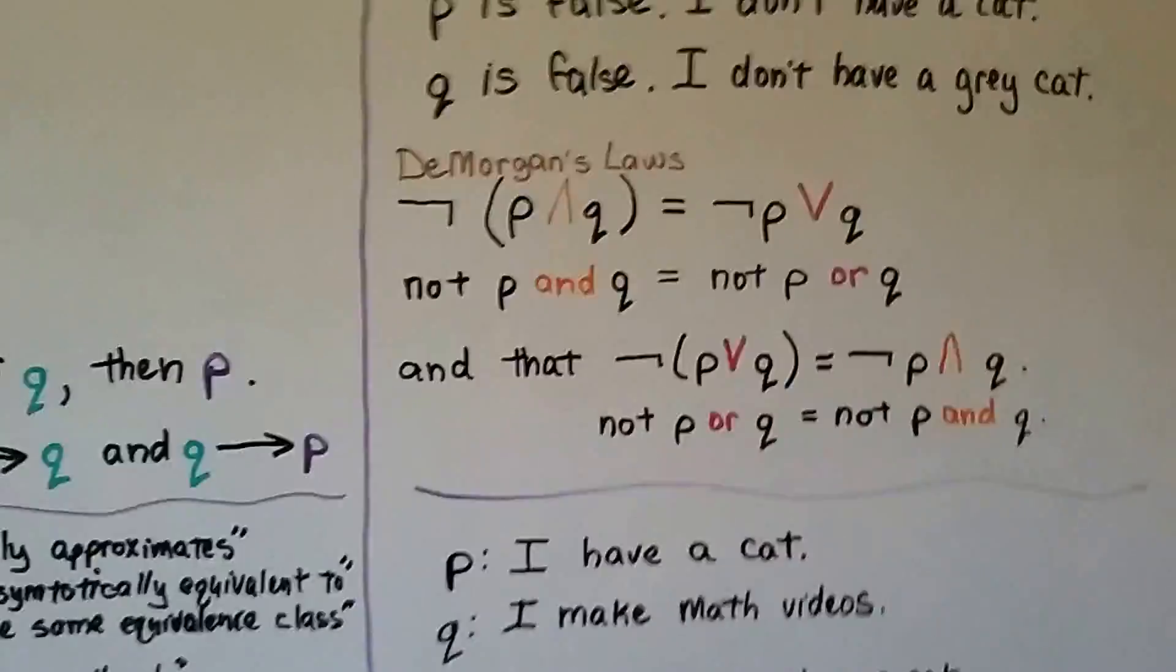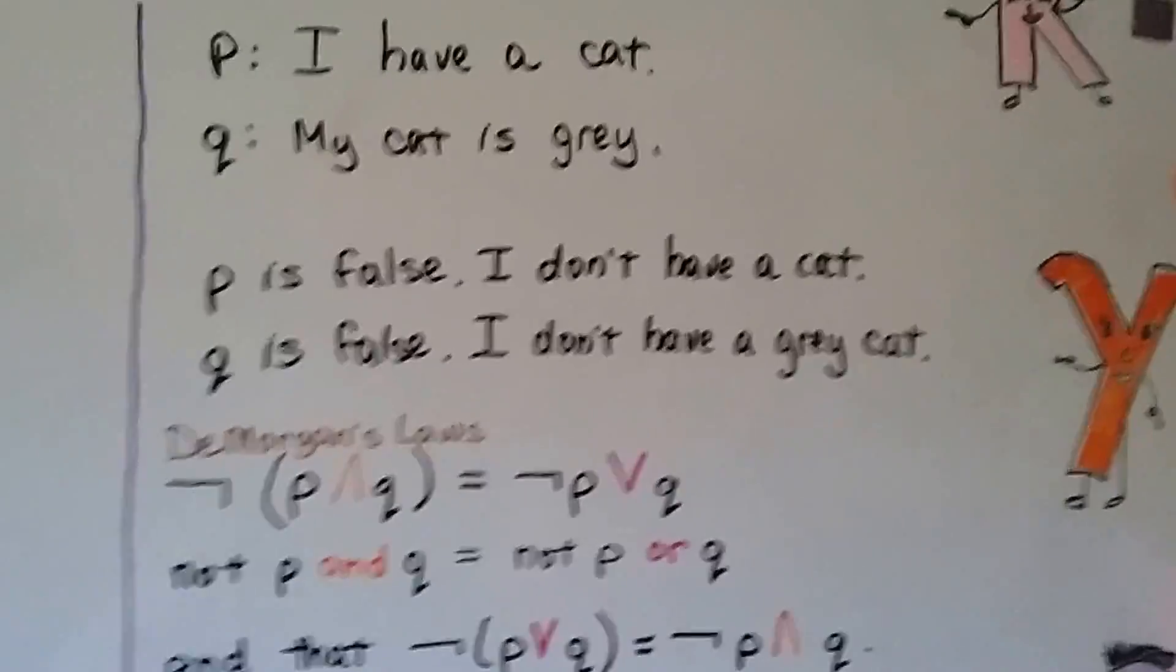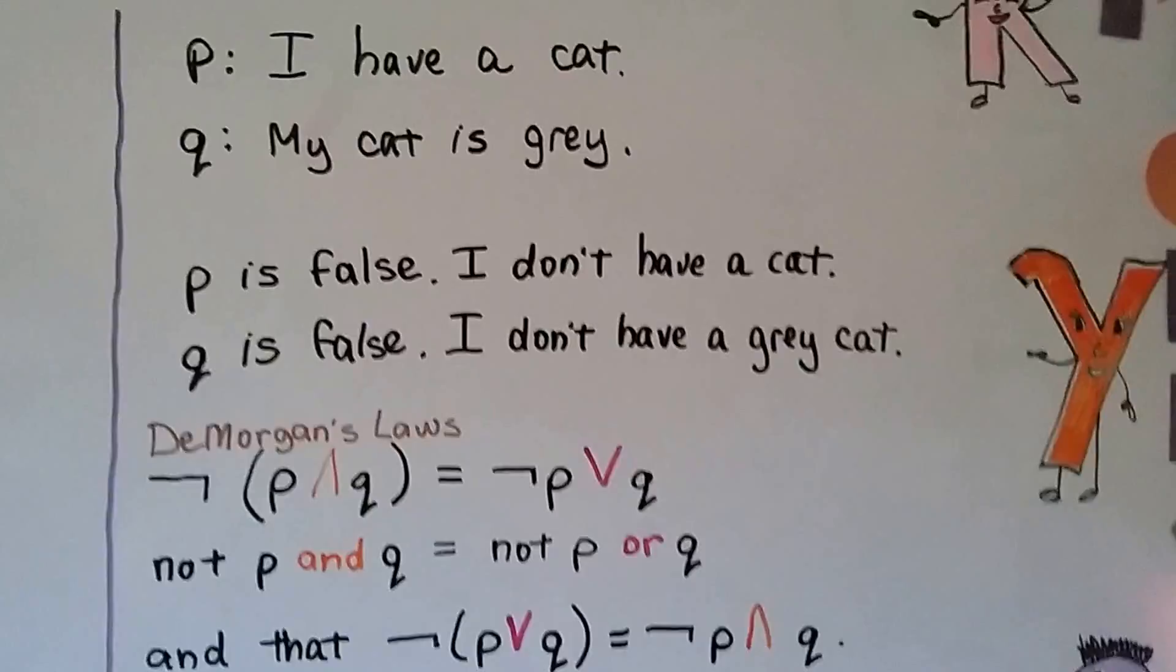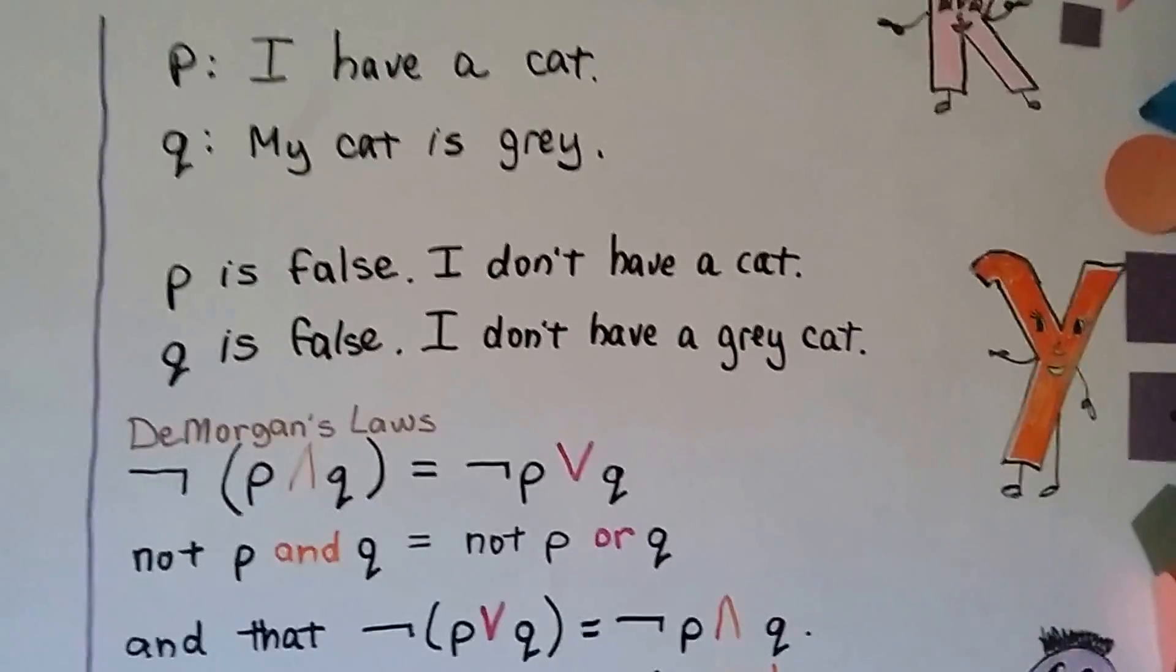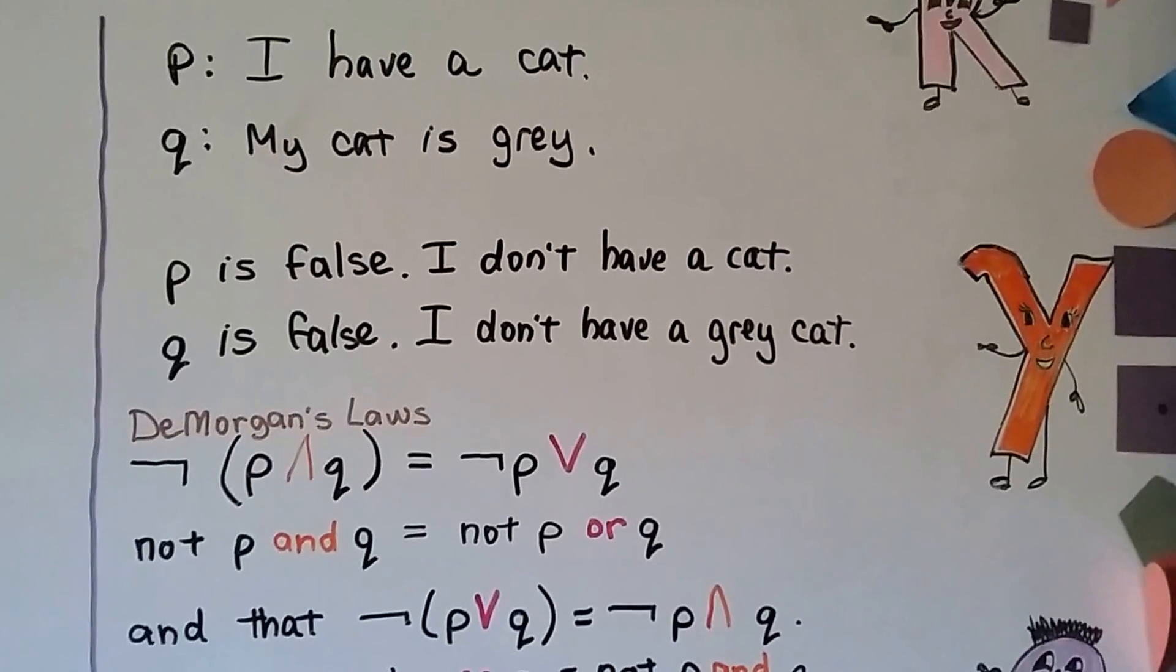Let's take a look at this. I have a cat. Well, that's false. My cat is gray. That's also false because I don't have a cat. So P is false, I don't have a cat. Q is false, I don't have a gray cat.